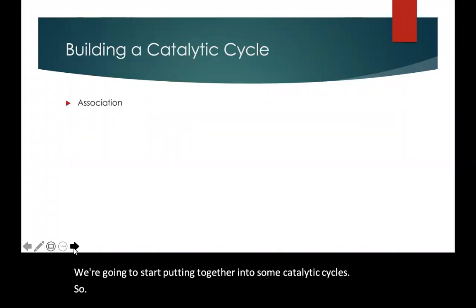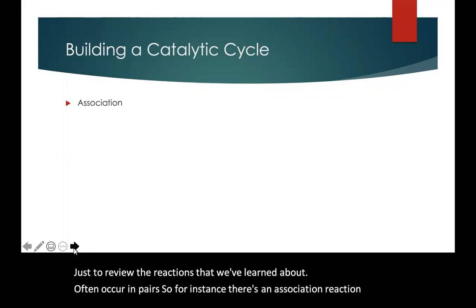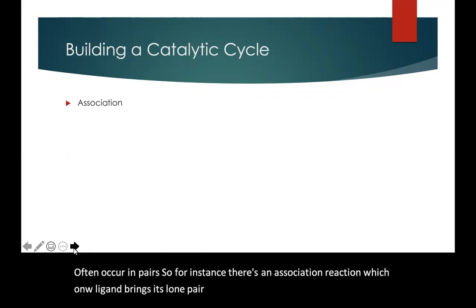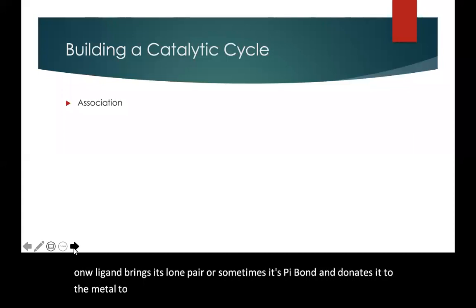So just to review, the reactions that we've learned about often occur in pairs. So for instance, there's an association reaction in which a new ligand brings its lone pair or sometimes its pi bond and donates it to the metal to form part of a transition metal complex.